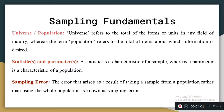Remember: statistics means the characteristics of your sample and parameter means the characteristics of your population. The next concept is sampling error — the bias or error that arises as a result of taking a sample from the population rather than using the whole population. When we collect information from a sample and commit some error, the result may be affected. That is called sampling error.